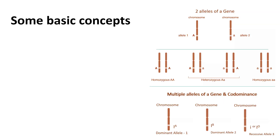Let us look at some basic concepts in genetics. We know that a gene is an active portion of the DNA coding for a protein, and it is present at a particular location in the chromosome. Genes generally have two variants — for example, gene A has a variant capital A and the other variant is small a. These variants of the same gene present at the same location on the chromosome are called alleles. Mostly genes have two alleles, but sometimes there are genes which have more than two alleles — those are known as multiple alleles.